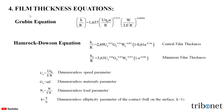Now let us see the film thickness equations in EHD. The first one is the Grubin equation. This equation provides a complete answer to the question of how the oil film is able to separate surfaces at such large loads, and also this equation reveals the small effect of the load W, which indicates a high bearing capacity of the EHD films.